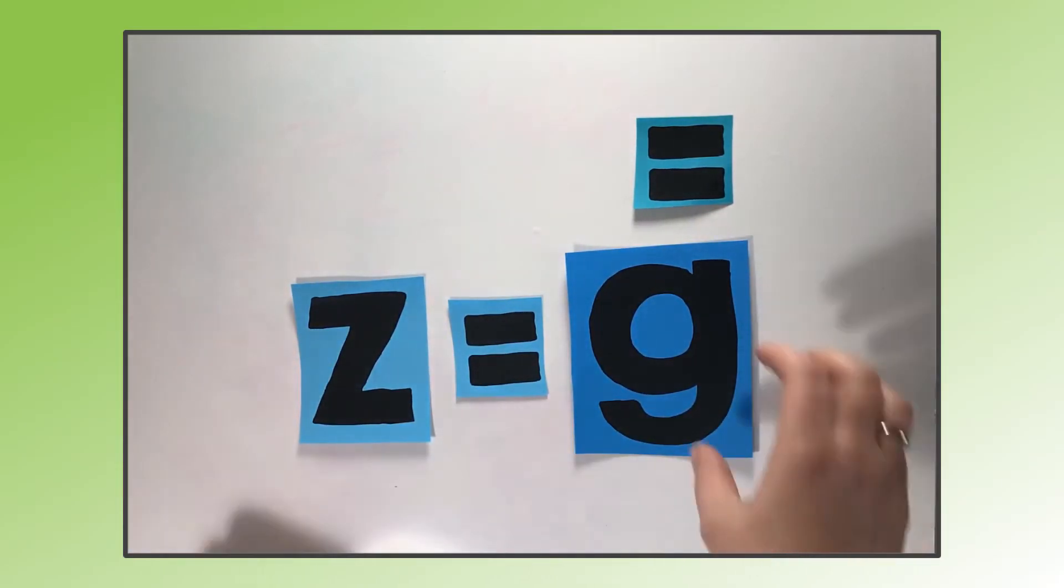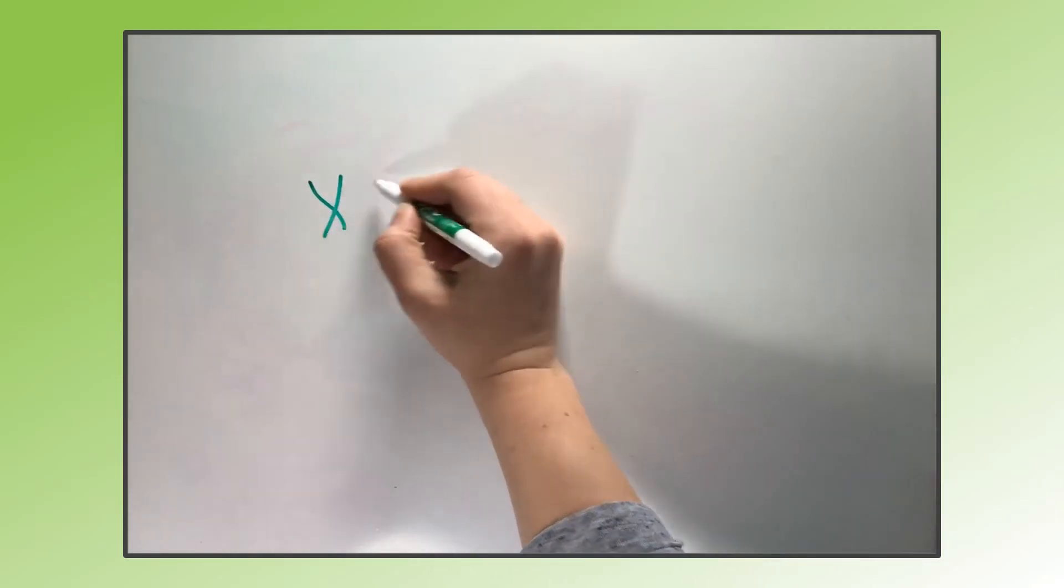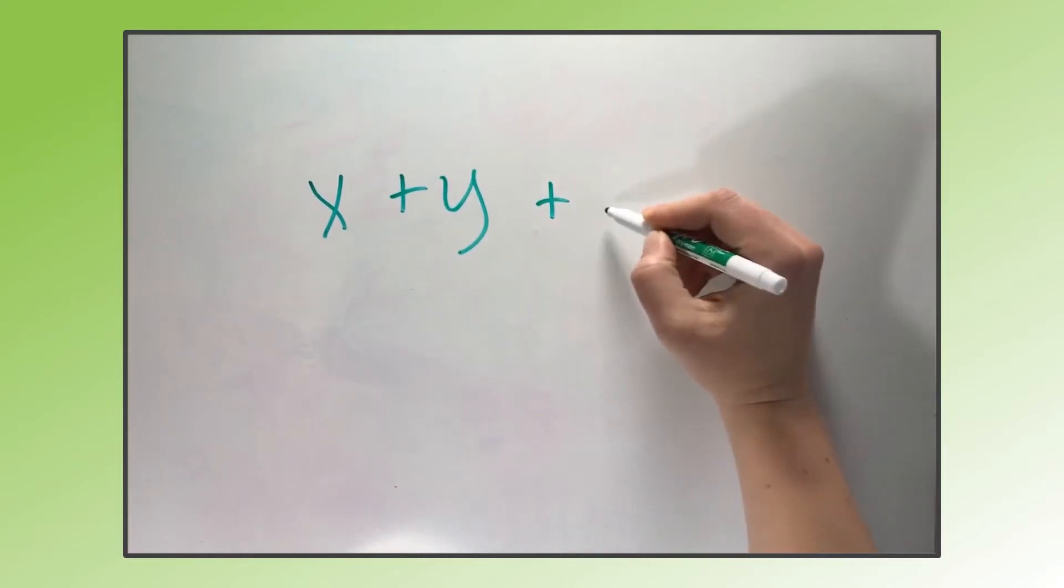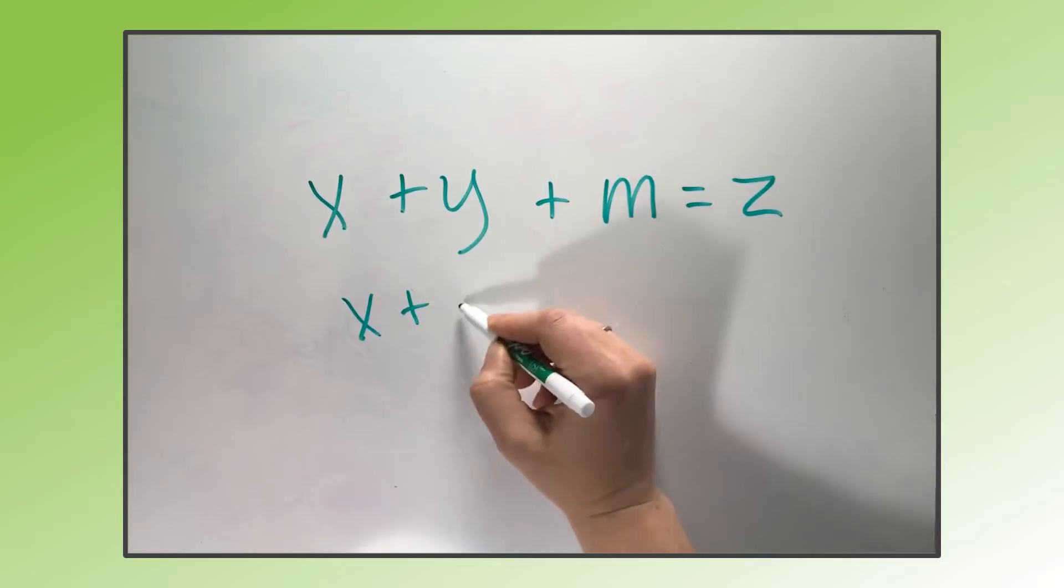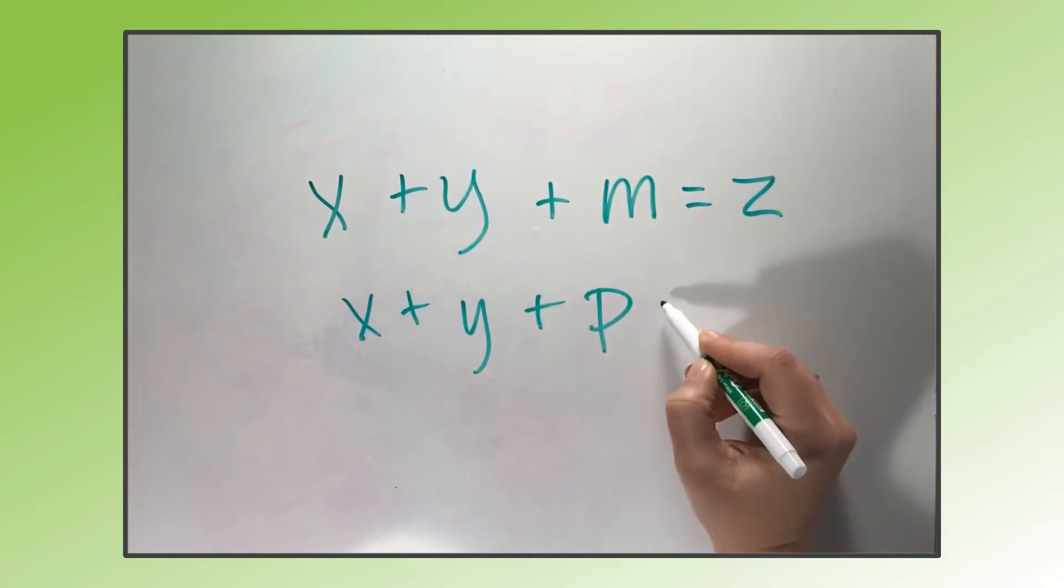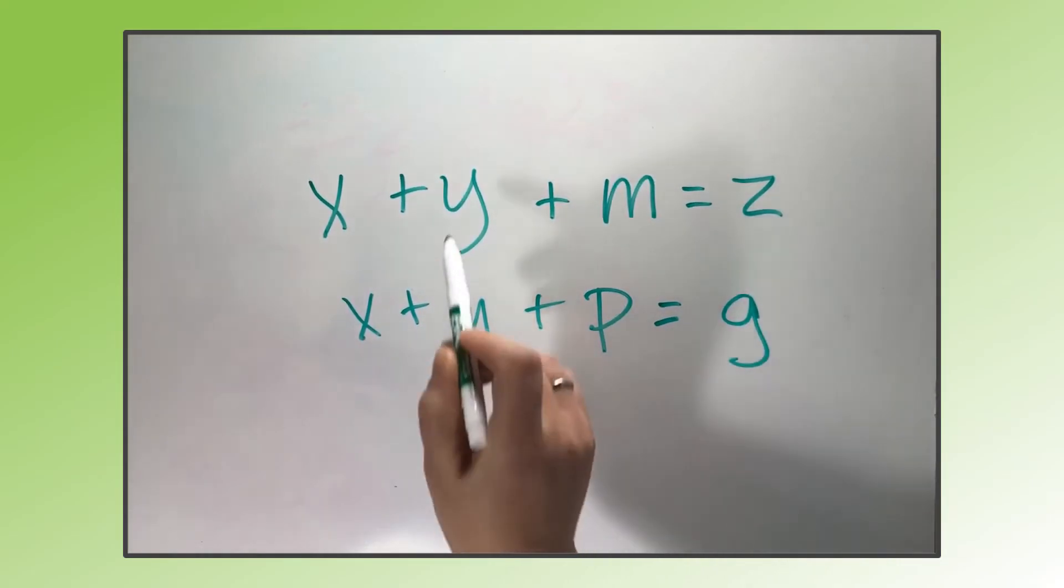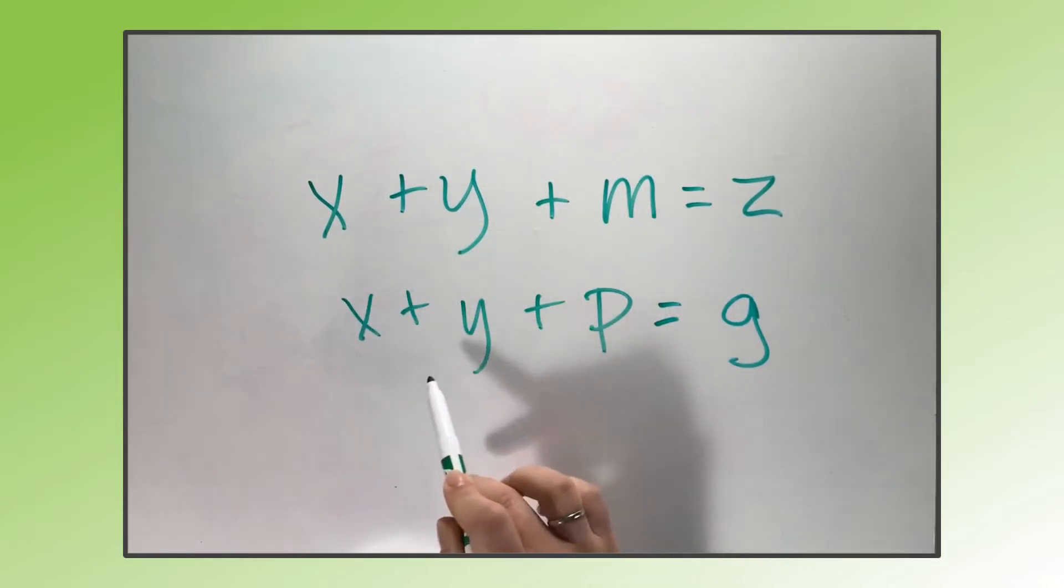It's a little different, and it doesn't work if it's not the entire side of an equation. For example, if we had x plus y plus m, one more piece equals z, and then x plus y plus p equals g. We still have x plus y, x plus y.